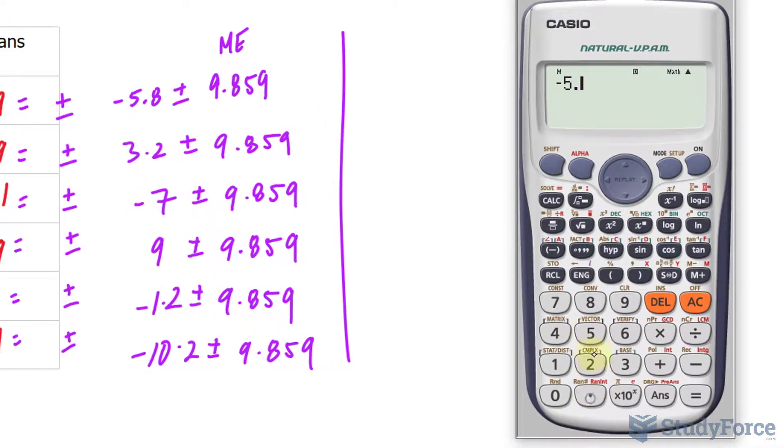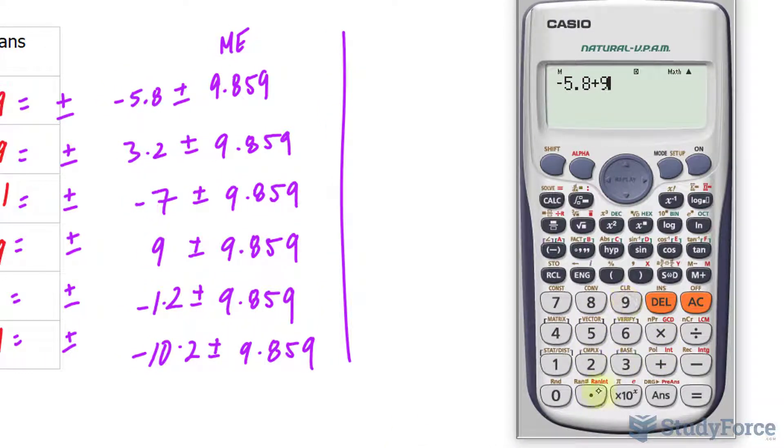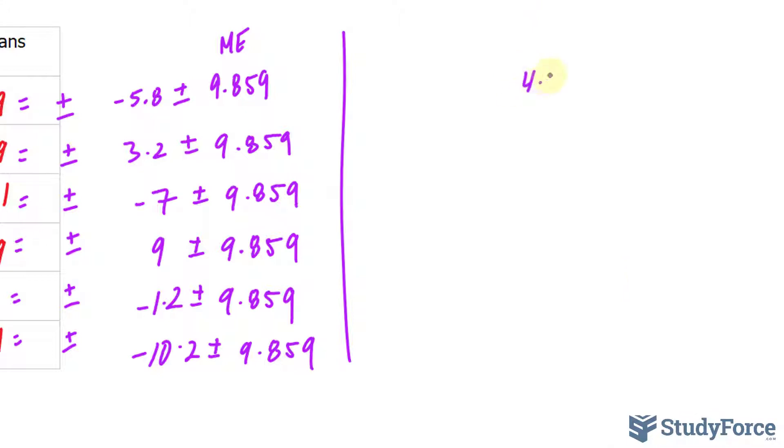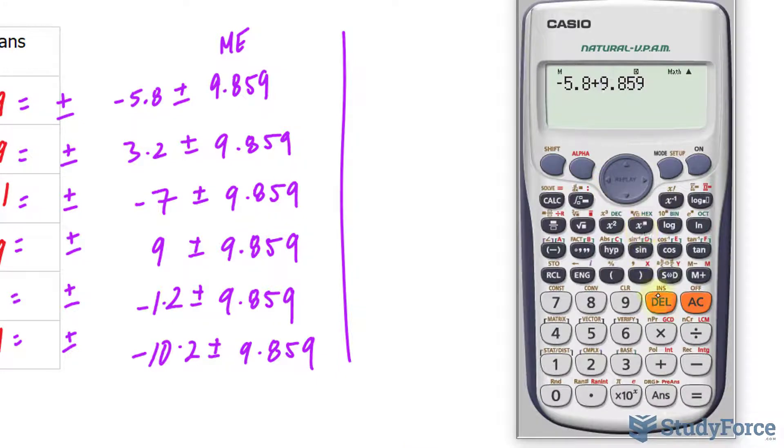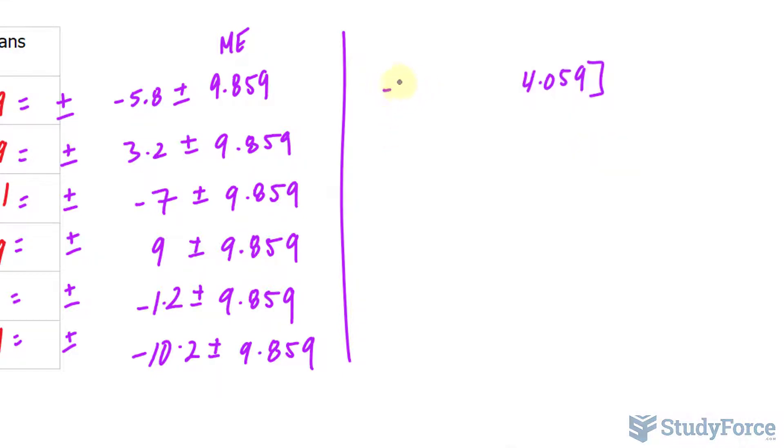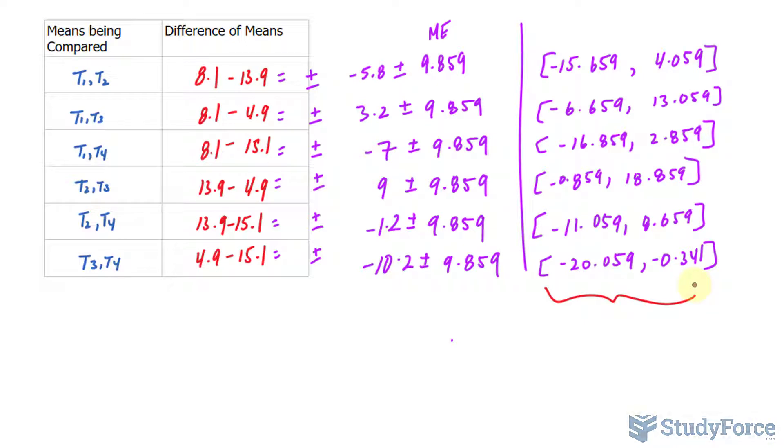In case you're confused, I'm taking negative 5.8, adding it to 9.859. That is 4.059, that's the upper bound, and I'll be taking the exact same difference and subtracting it, where I get negative 15.659. So this is our confidence interval, and this is exactly what the question is expecting us to calculate for each of these treatments that we're comparing. Here's what the rest look like. By finding this, we just answered the first part of this question, which is to get the confidence intervals.